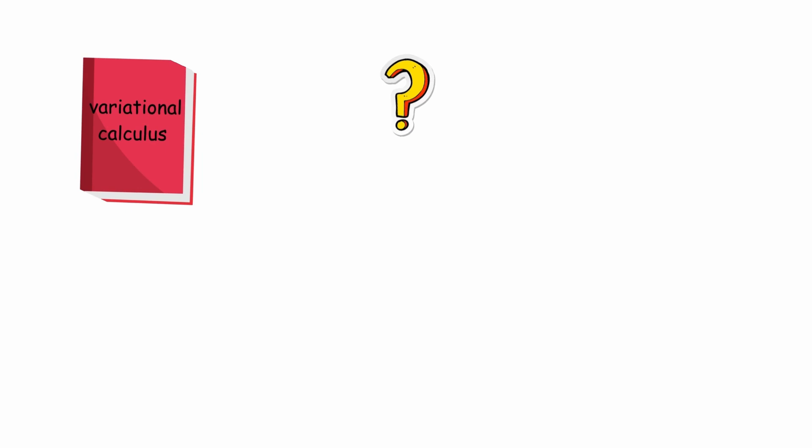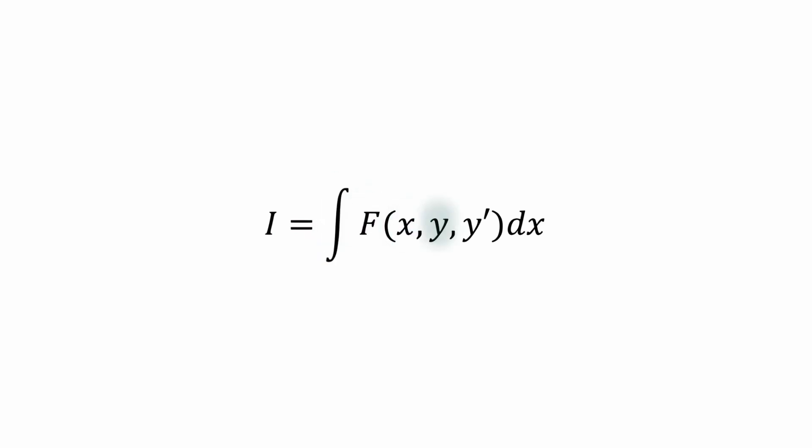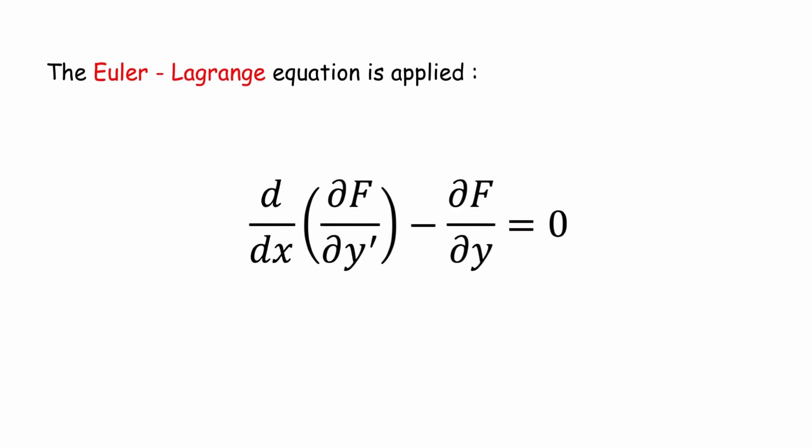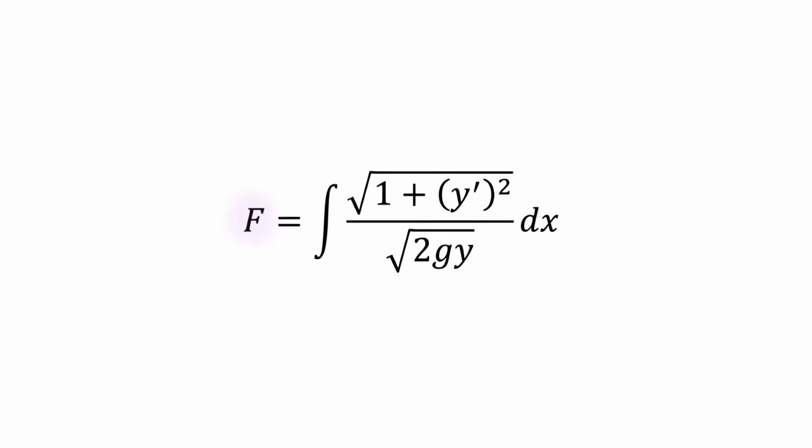In variational calculus, to find the function y(x) that minimizes an integral of the form I equals integral of f(x, y, y') dx, the Euler-Lagrange equation is applied: d/dx(∂f/∂y') - ∂f/∂y = 0. For this case, the function f is f = √(1 + y'²) / √(2gy).